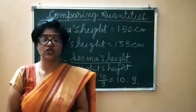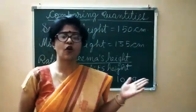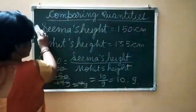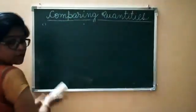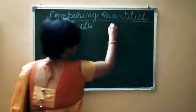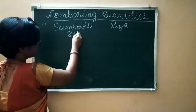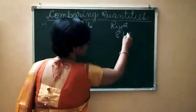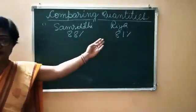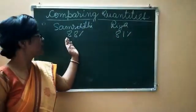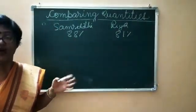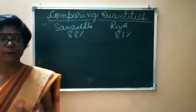When annual examination results come, you must have heard that someone got 90 percent, someone got 95 percent, and so on. Suppose there are two students, Samrithi and Riya. Samrithi has got 88 percent and Riya has got 81 percent. Then who got more marks? Samrithi got more marks by 7 percent, and Riya got less marks than Samrithi by 7 percent.